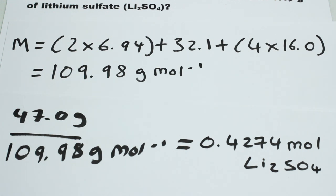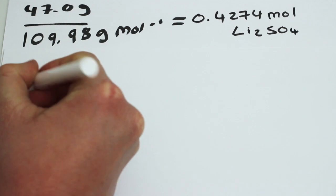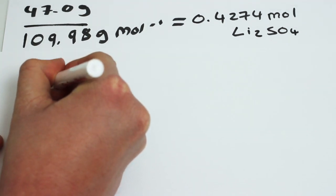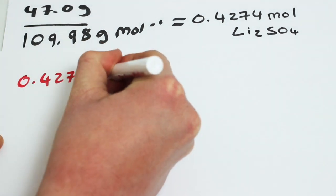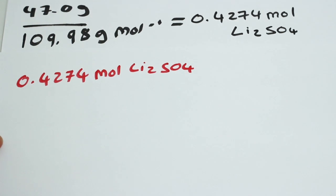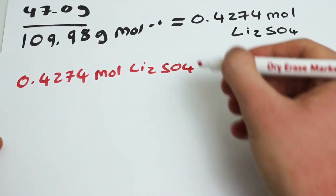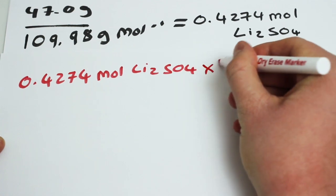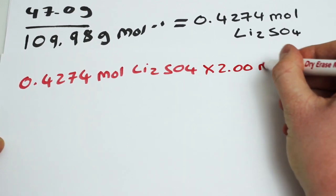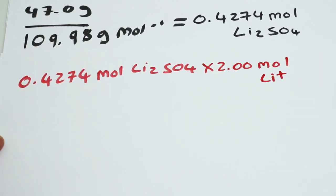It is this information that we need to work out the number of moles of lithium ions in the sample. To work out the number of lithium ions in the sample, we take the value of the number of moles of lithium sulphate present, which is 0.4274 moles of Li₂SO₄, and we multiply that by the number of moles of lithium ions in one mole of lithium sulphate, which is 2.00 moles of Li⁺.